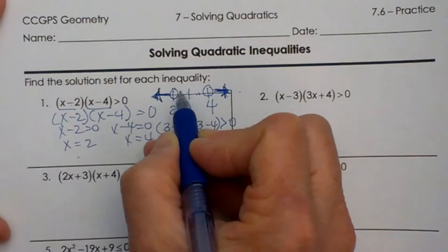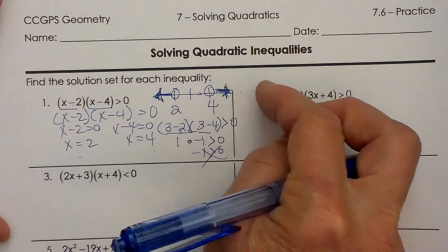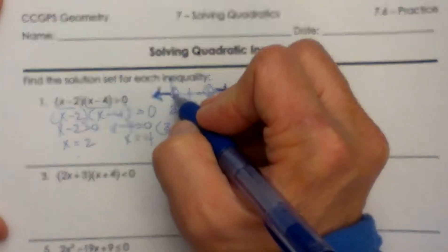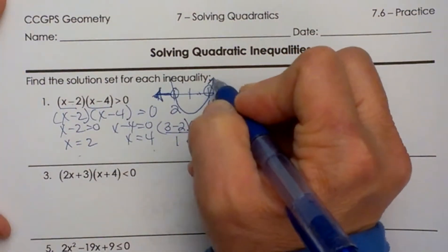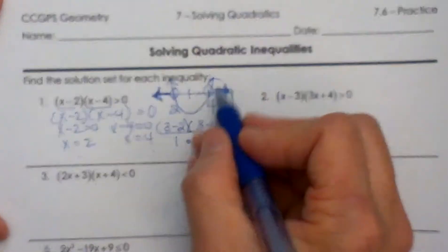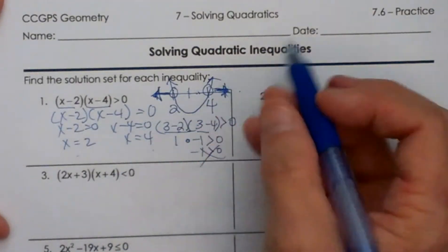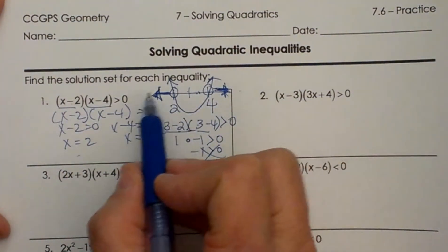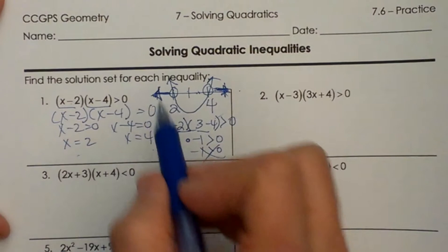So you are either going to shade in between or on the outside. Now why would that be? Well remember this is a quadratic so you have got a parabola. So I am just drawing it in two dimensions instead of one dimension. So here are our solutions. And you are either going to shade inside the parabola or outside the parabola. And this one is on the outside.